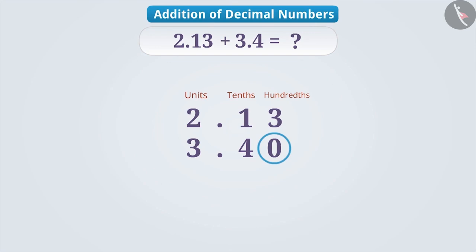Writing 0 makes no change in the value of the number. But by doing so, the number of digits after the decimal points becomes equal. This helps in performing the addition operation. Always remember that it is correct to add 0 after a non-zero digit in the decimal number, and it is incorrect to add 0 before the non-zero digit after the decimal point, because this changes the value of numbers.